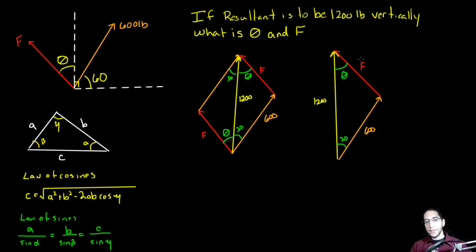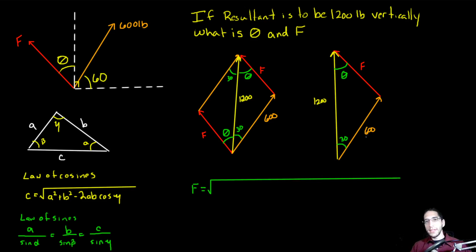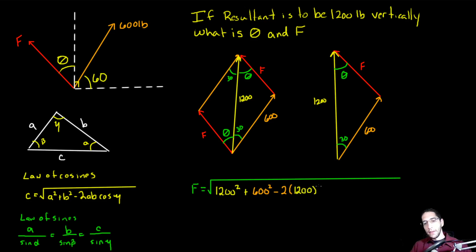So let's use the law of cosines. F is going to be our C, so F equals the square root of 1,200 squared plus 600 squared minus 2 times 1,200 times 600 times the cosine of 30 degrees. The angle opposite F is 30 degrees, so we use cosine of 30.